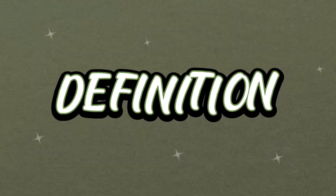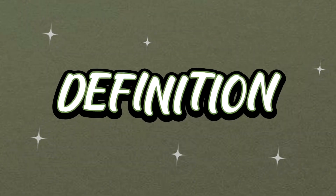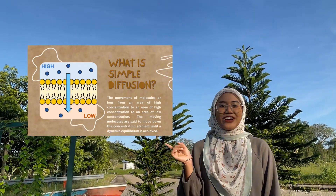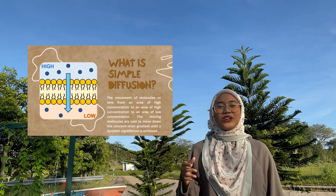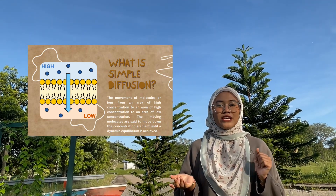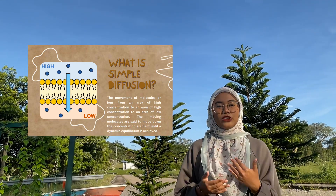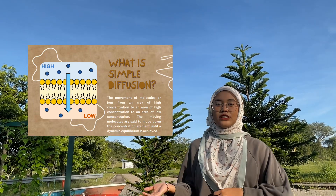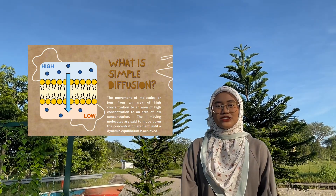You don't want them to move, but they just do it on their own. So what is Simple Diffusion? Simple Diffusion is the movement of molecules or ions from an area of high concentration to an area of low concentration. The moving molecules are said to move down the concentration gradient until a dynamic equilibrium is reached.